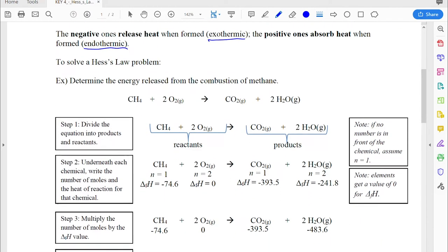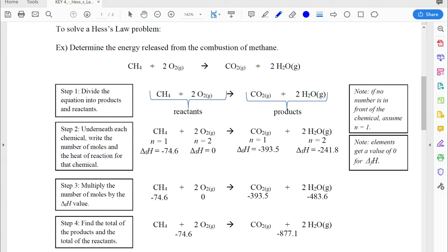All right, so I've got a worked out example of how to solve one of these Hess's Law problems. The example we're going to do is the combustion of methane. So here's the reaction that we're dealing with, and you can kind of see it's got a left-hand side and a right-hand side. So the left-hand side is the reactants, and the right-hand side is the products. And that is my first step for solving one of these problems, is just figure out where the reactants and products are.